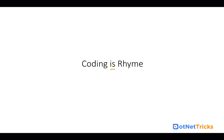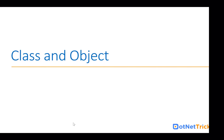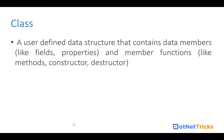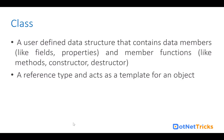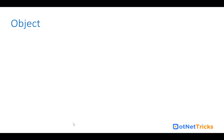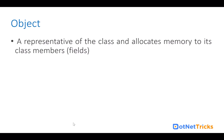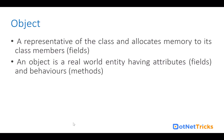Now let's start with class and object. A class is a user-defined data structure that contains data members like fields and properties, and member functions like methods, constructors, and destructors. A class is a reference type and acts as a template for an object. An object is a representative of the class and it allocates memory to its class members. You can think of an object as a real-world entity having attributes like the fields we have within a class, and behaviors like the methods we have within a class.